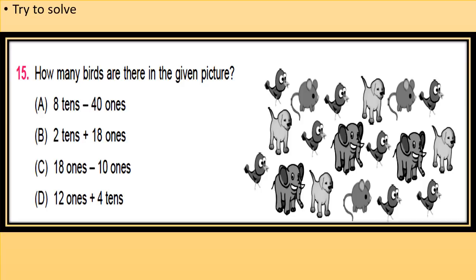Option A is 8 tens minus 40 ones. 8 tens means 80, and 40 ones means 40. So 80 minus 40 equals 40. Similarly, you calculate the numbers for B, C, D and then choose the correct option.